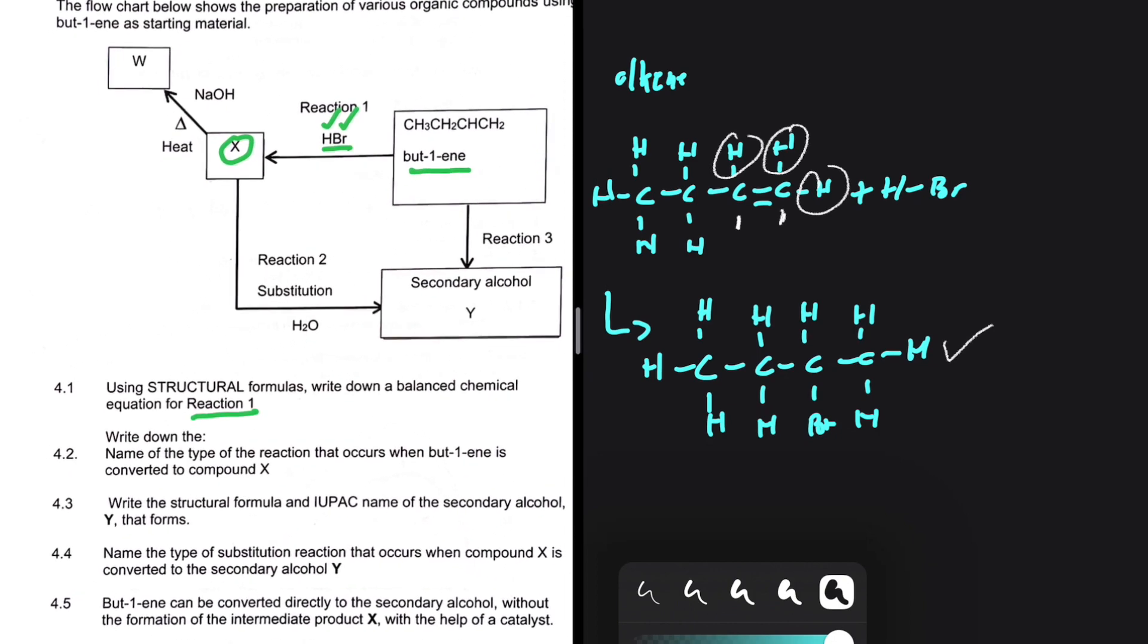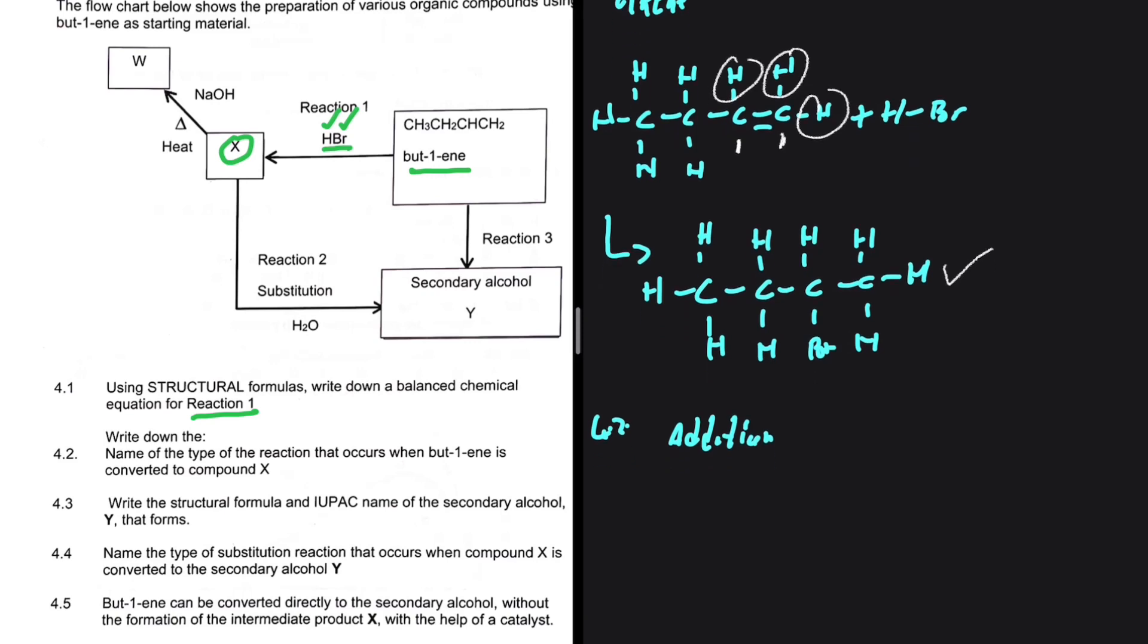Let's do 4.2. Write down the name of the type of reaction that occurs when but-1-ene is converted to compound X. We already know that if a reaction starts with an alkene, we have an addition reaction. Quite an easy question to answer.